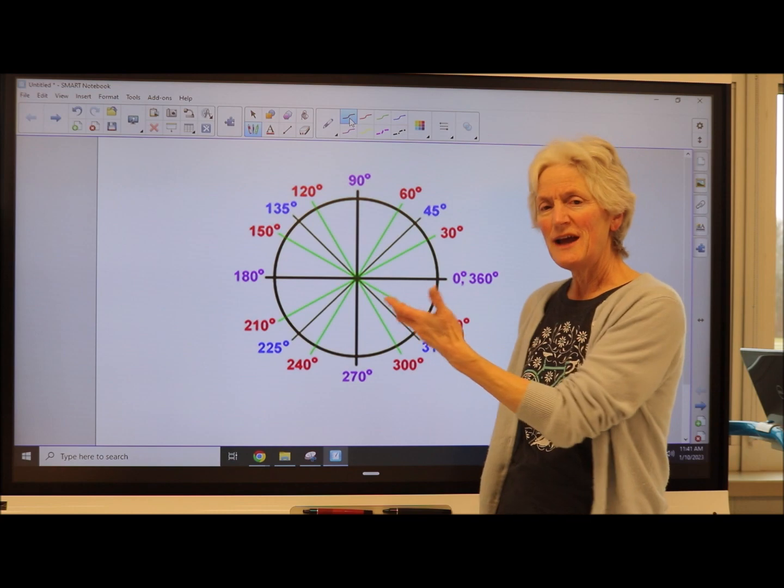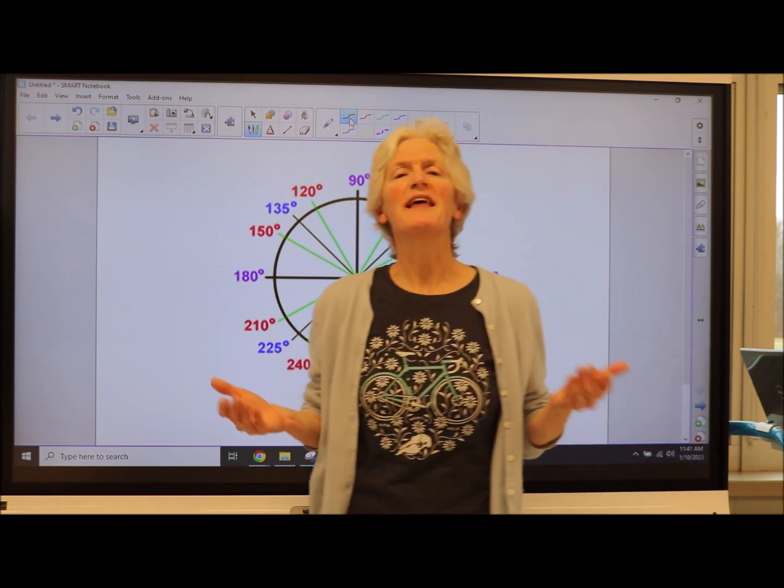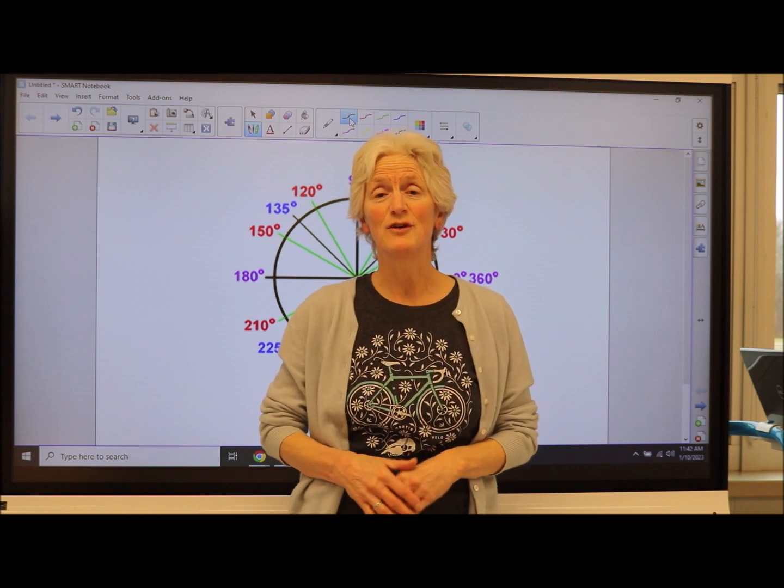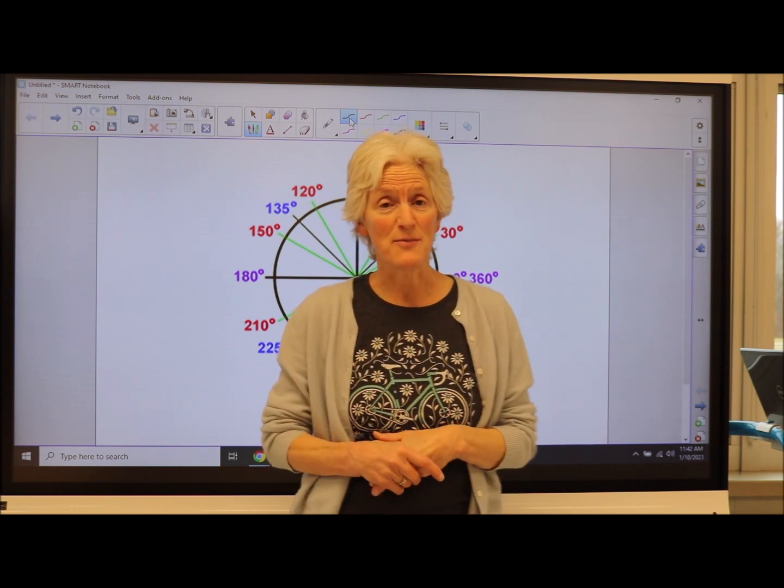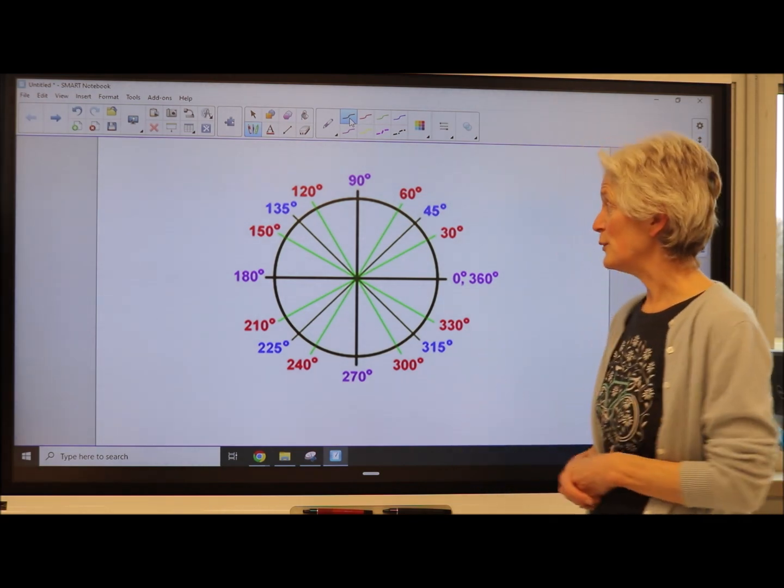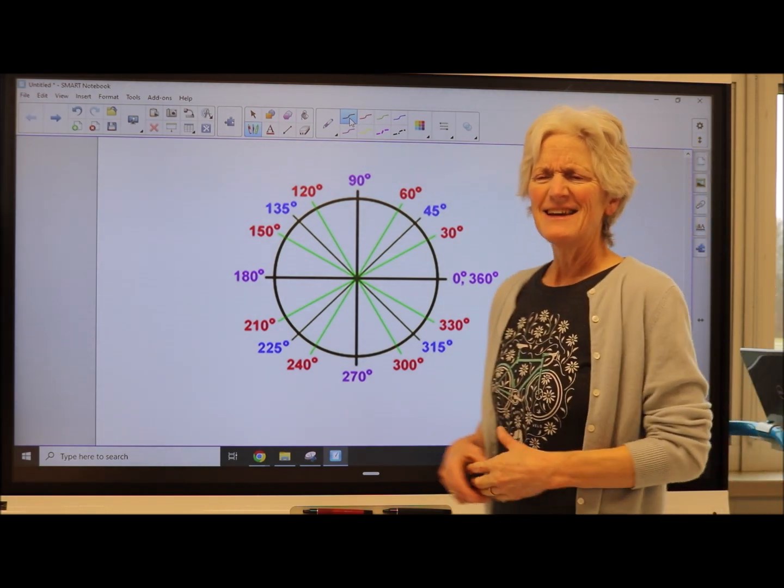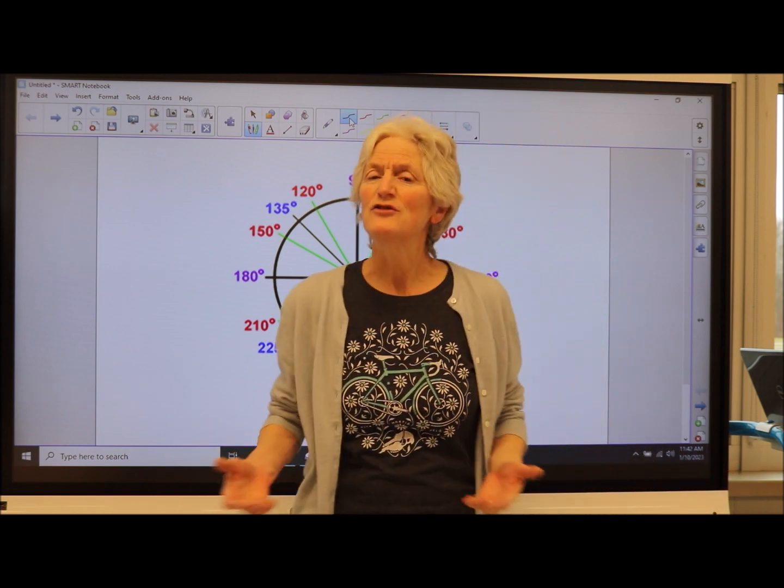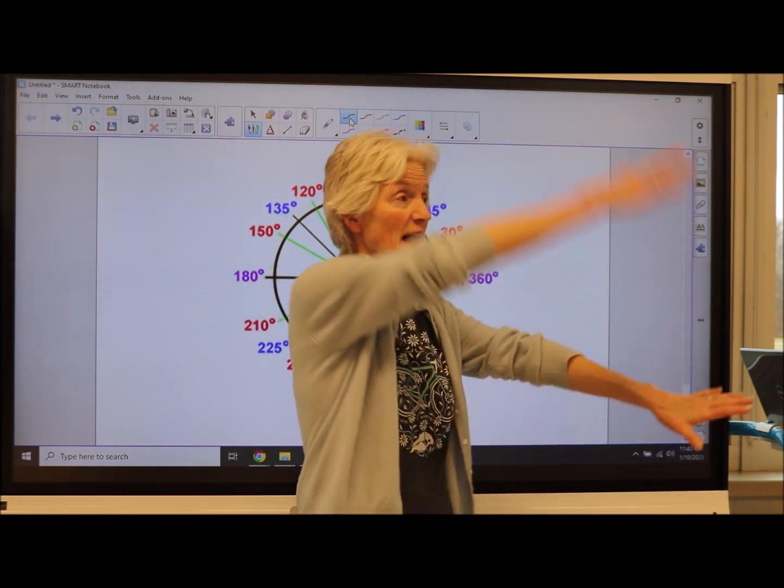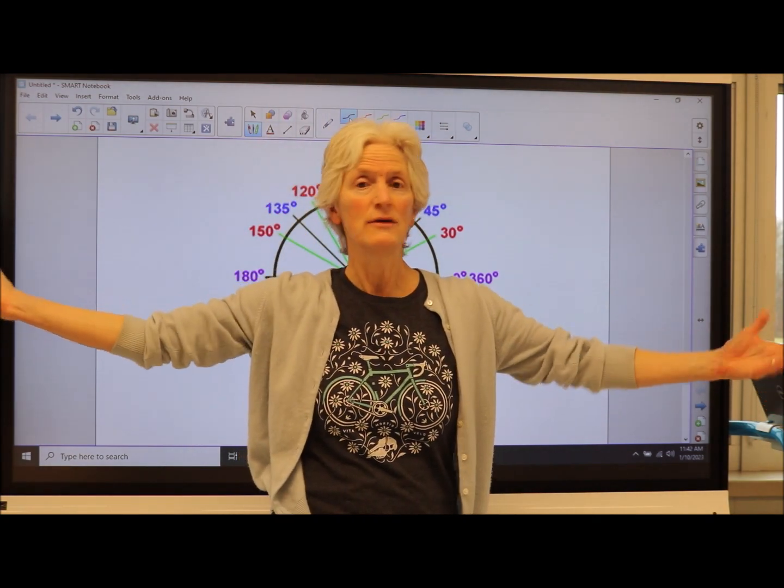Degrees are useful to us but they are very cumbersome and awkward whenever we try to do calculus or advanced mathematics or science. Radians are much more elegant so we just have to become more fluent with them, and they're really not that bad if we just think about the circle and breaking that circle up into fractions.